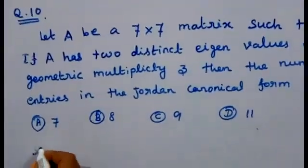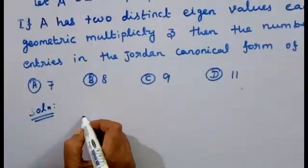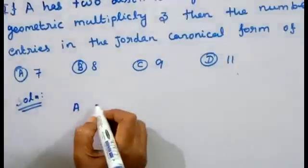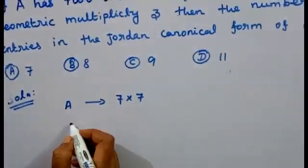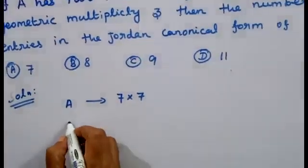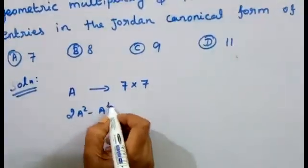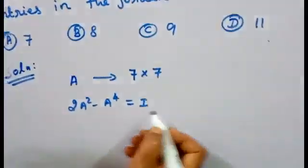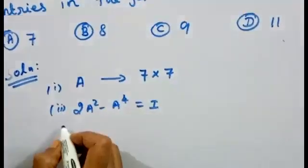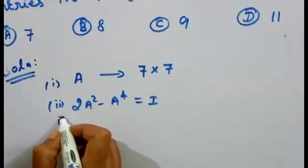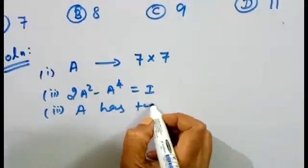Now we will talk about the solution. The given condition is 2A² minus A⁴ is equal to I. The second condition is that A has two distinct eigenvalues.